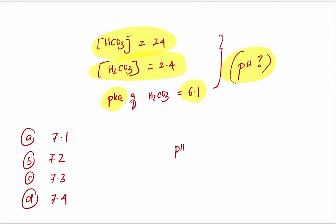Where pH is equal to pKa value plus logarithm of concentration of bicarbonate divided by the concentration of carbonic acid. Remember, this is the base by acid. Now, the pKa value of carbonic acid given to you is 6.1, right?